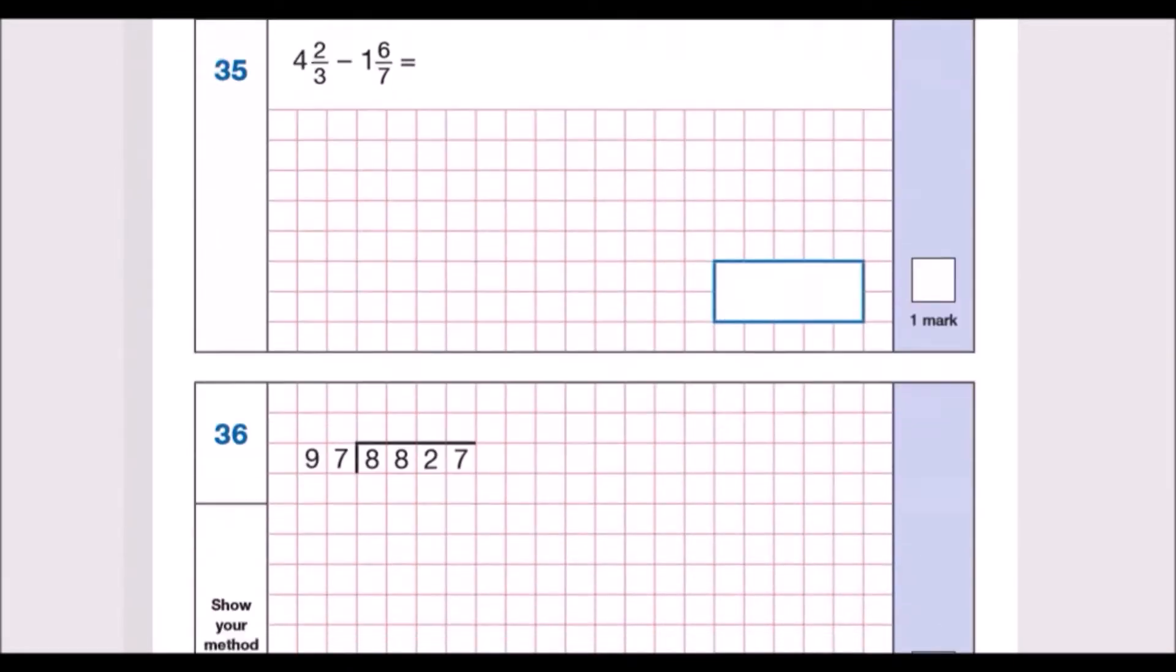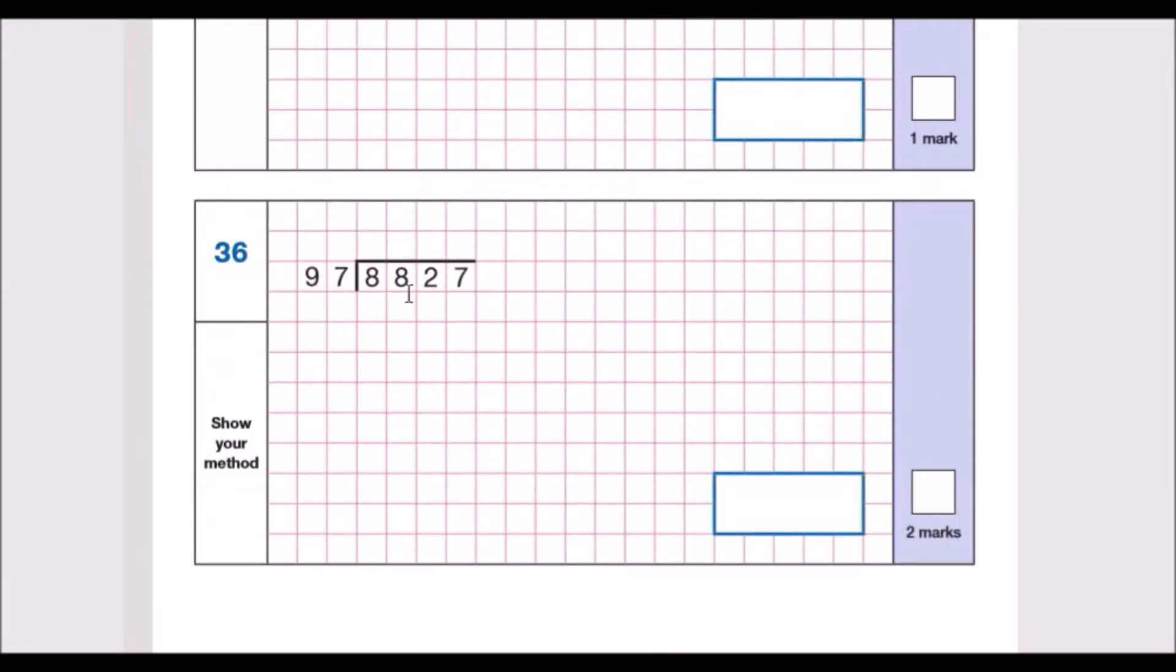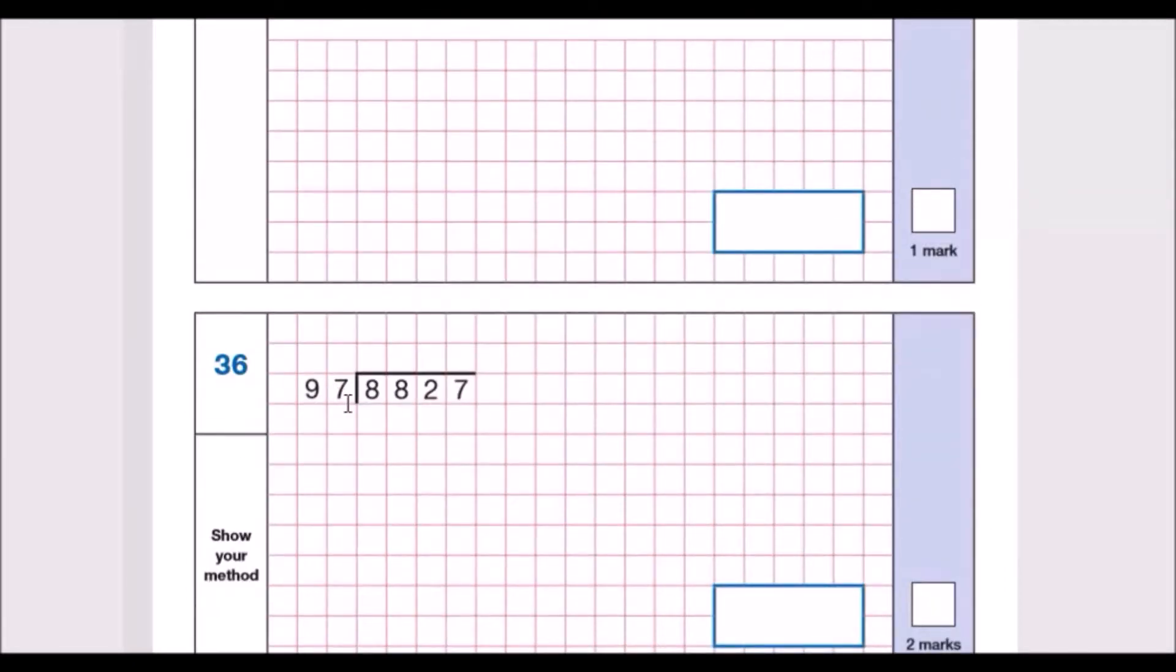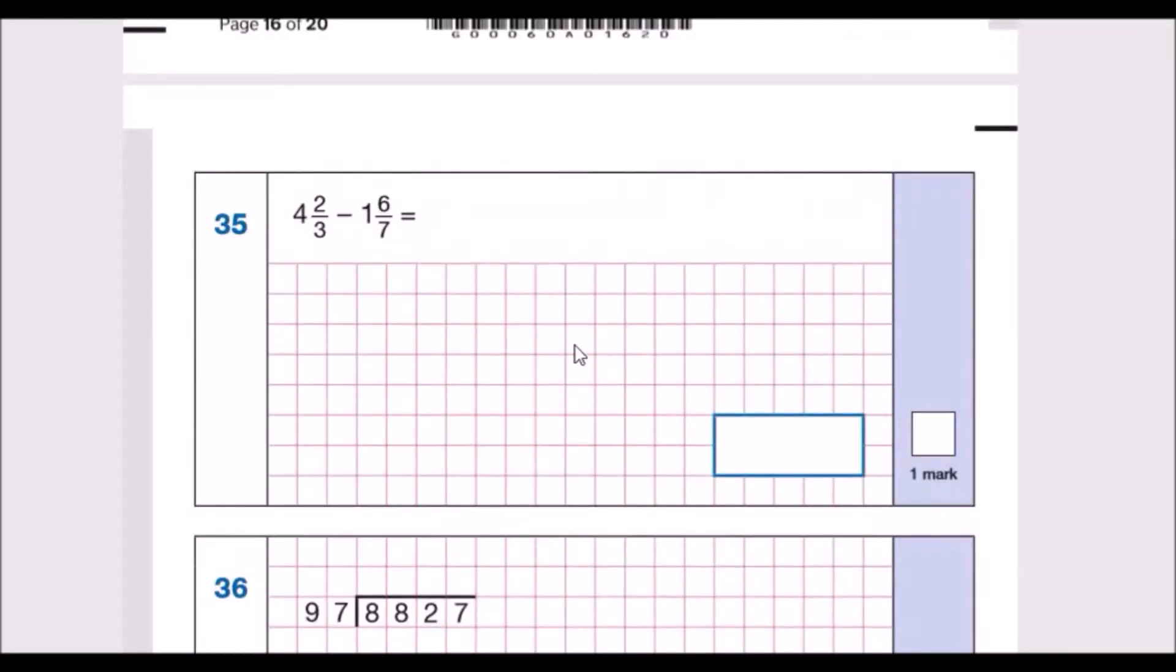Almost done, here comes the finale. Problem 35 - these ones always look awful but I think we can do our best. Four and two thirds minus one and six sevenths. This looks really scary but it's not. Do what we always do: convert these into improper fractions. The first one, 4 and 2/3 - times 4 by 3 which is 12, actually it will give you 14 over 3. Do the same here: 1 times 7 is 7 plus 6 is 13 over 7.